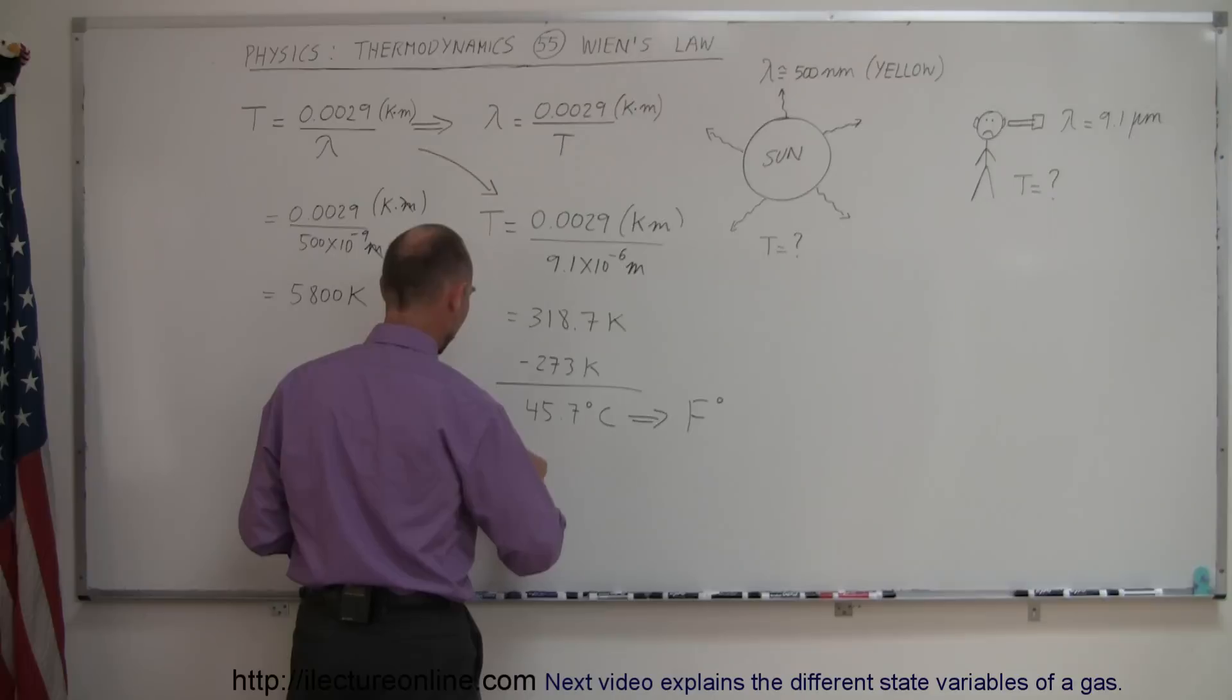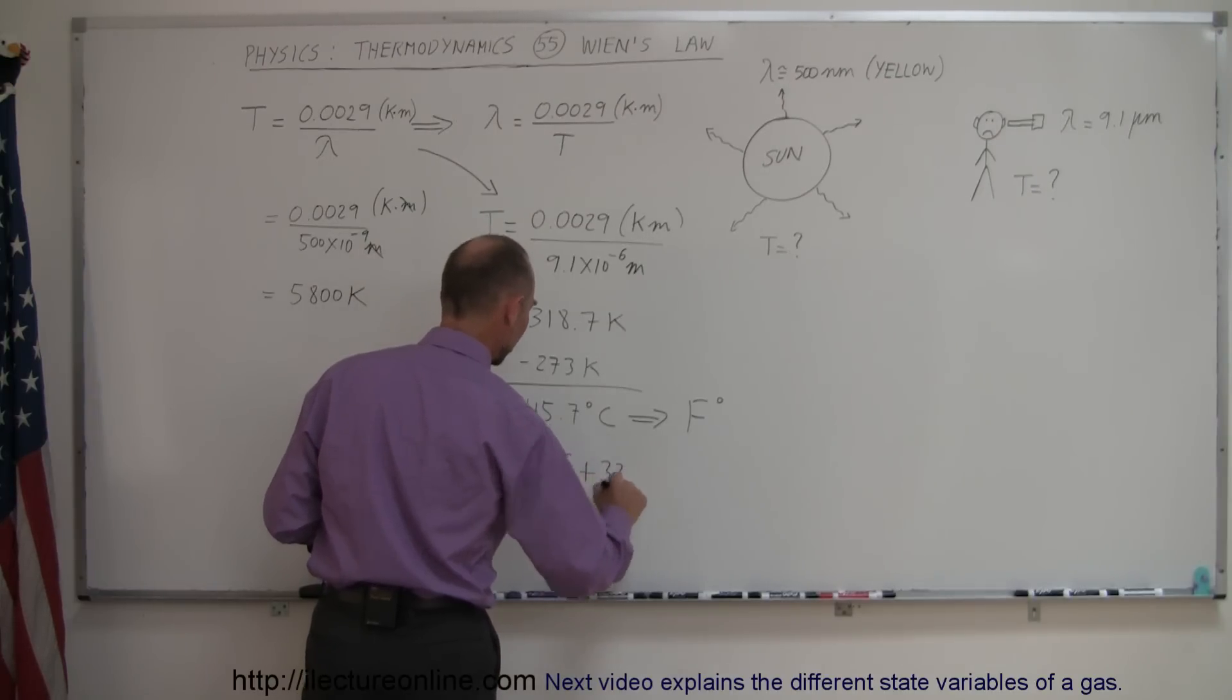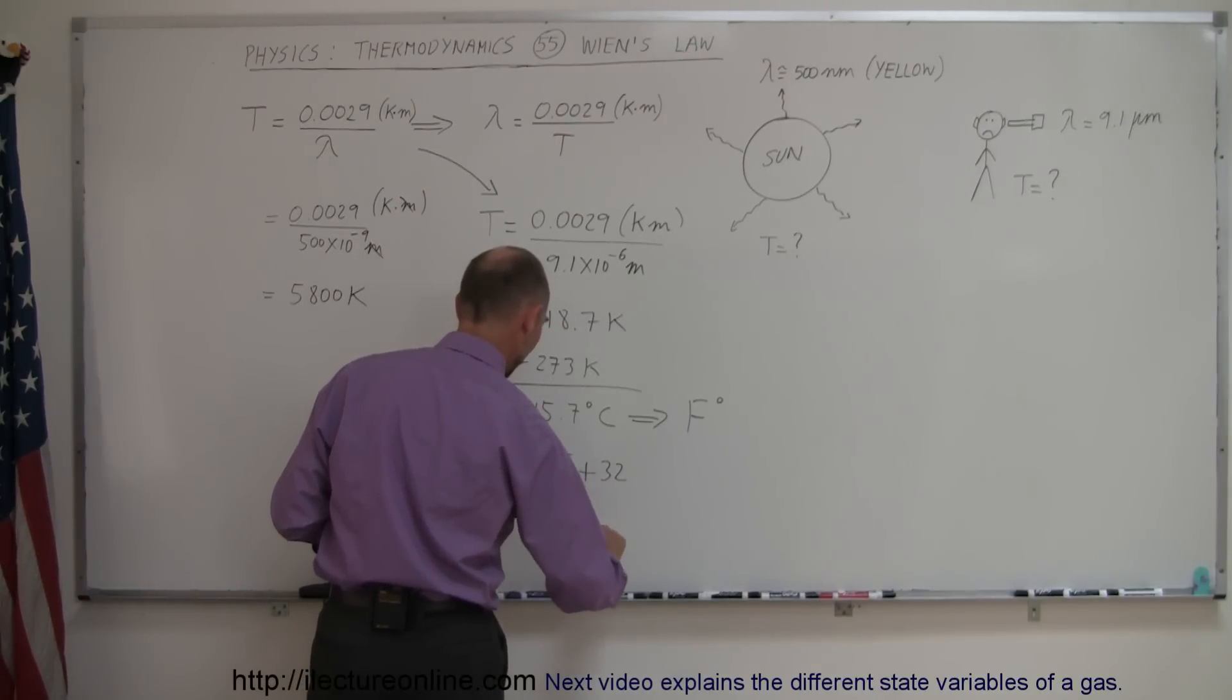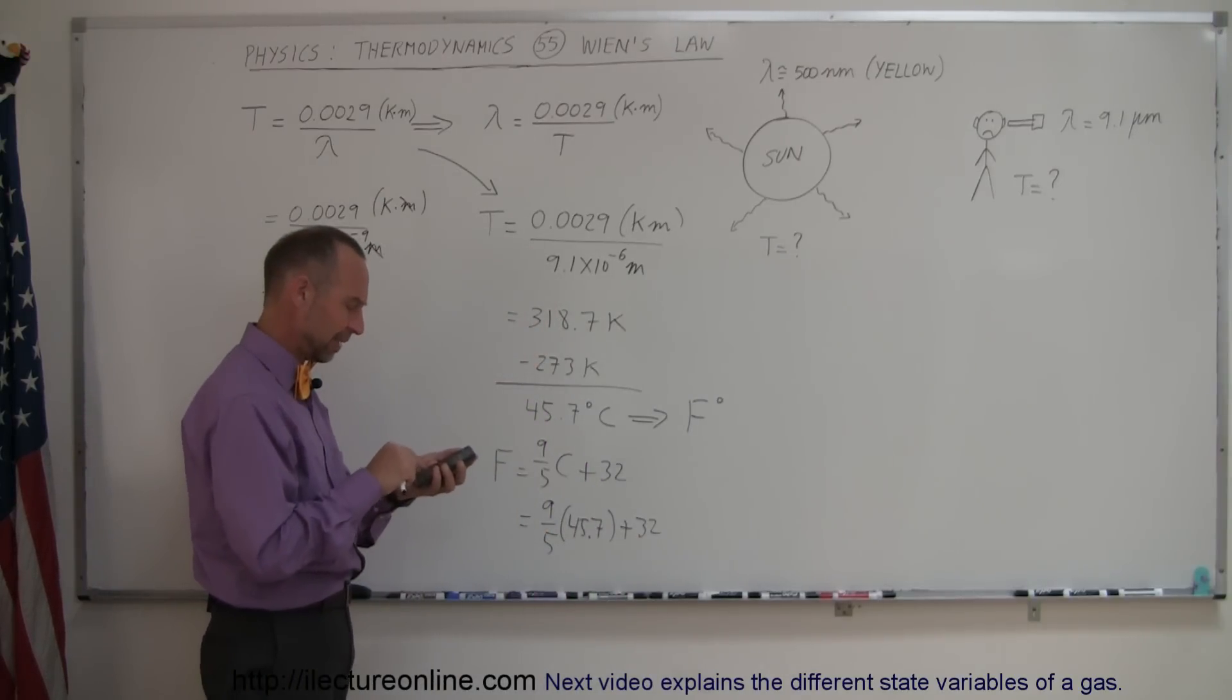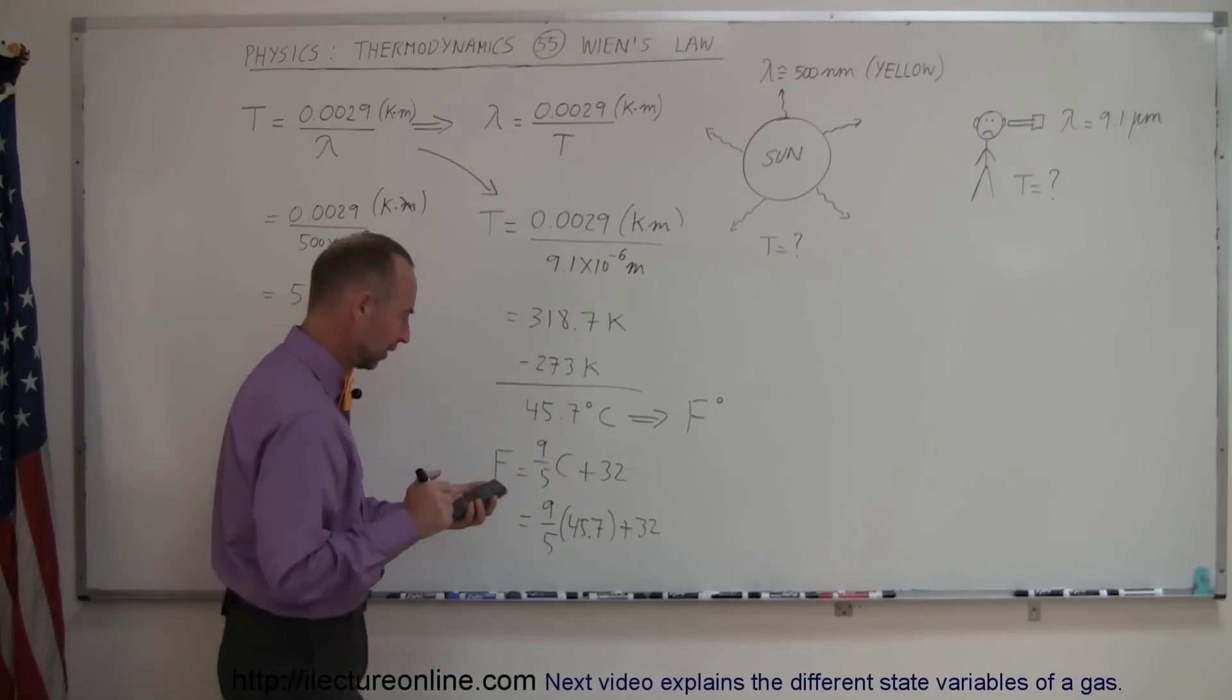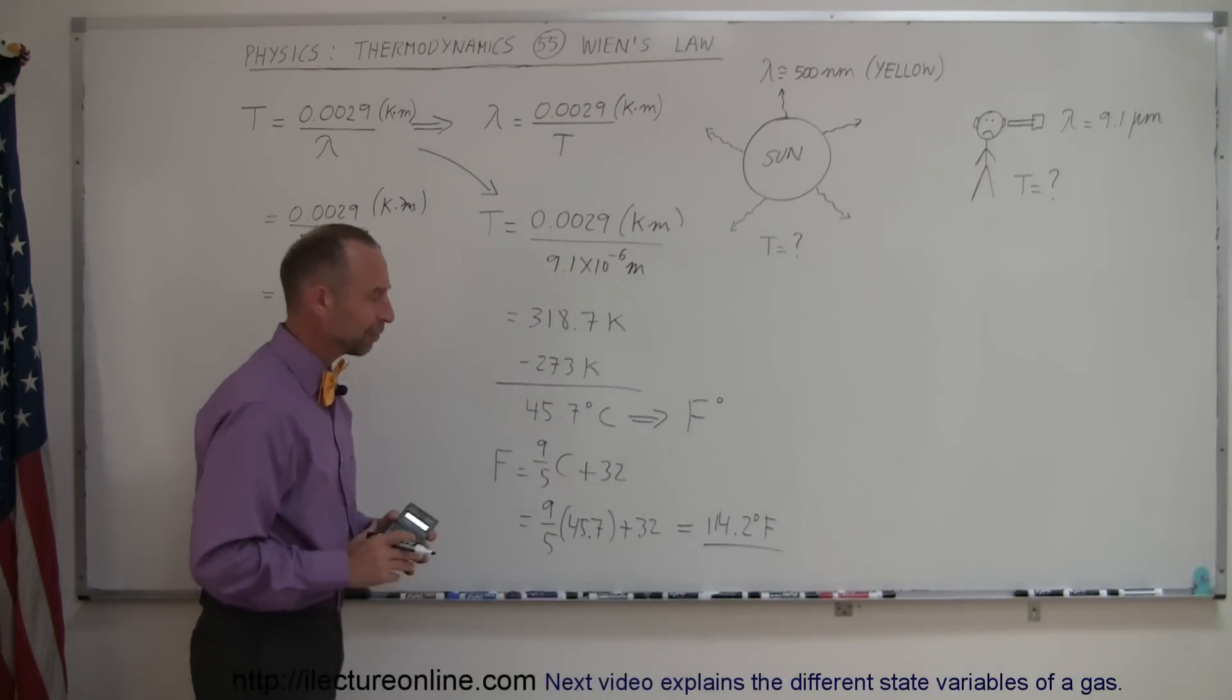Well Fahrenheit is equal to centigrade degrees times the fraction 9 over 5 and then we add to that 32 degrees. So let's do that here. So in Fahrenheit degrees we have 9 over 5 times 45.7 plus 32 equals 114.2 degrees Fahrenheit and of course you'd be in big trouble if your fever was quite that high.